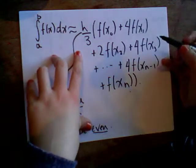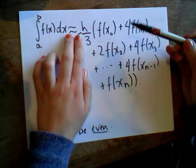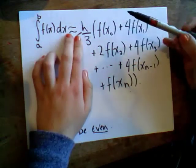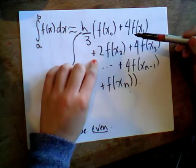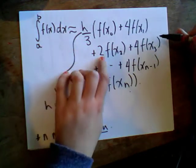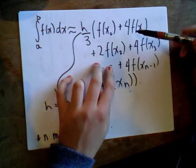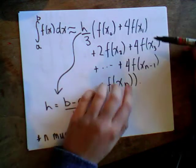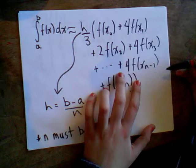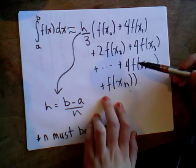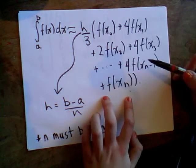So Simpson's rule states that this integral is approximately equal to h divided by 3 times f at x naught plus 4 times f at x1 plus 2 times f at x2 plus 4 times f at x3 plus, and then it goes back and forth 4, 2, 4, 2, 4, 2. So you get to the second last function value at 4 times f at xn minus 1 plus the final function value f at xn with nothing multiplied, just like the first one.